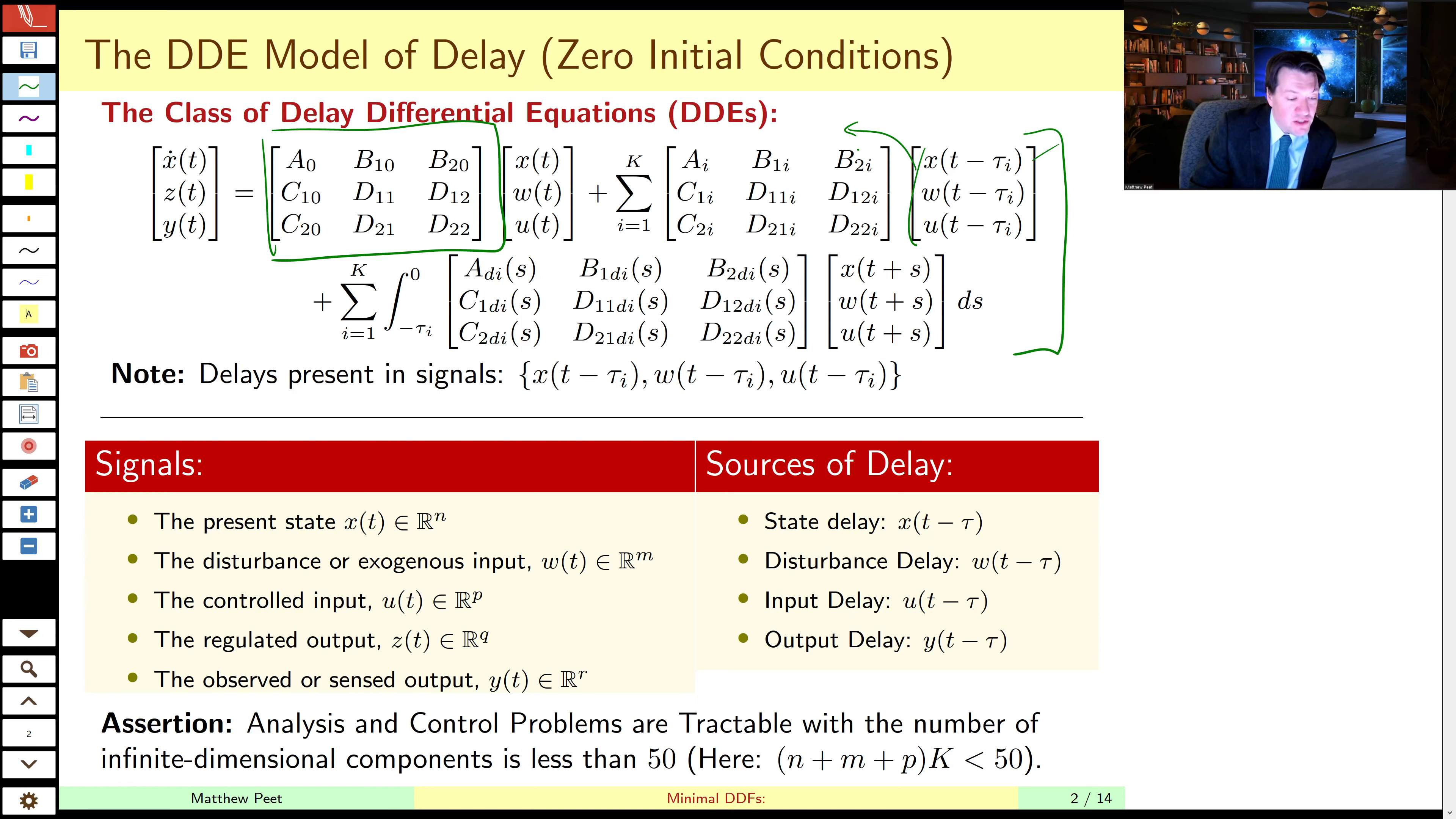which parameterize the effect of each of these state inputs on the dynamics. And so when we're constructing the infinite dimensional component of this for simulation or controller synthesis or analysis, the infinite dimensional history of the system, which can affect the dynamics, gets very large. So in particular, for each of these finite dimensional components, we have to construct a history corresponding to each of the delays.